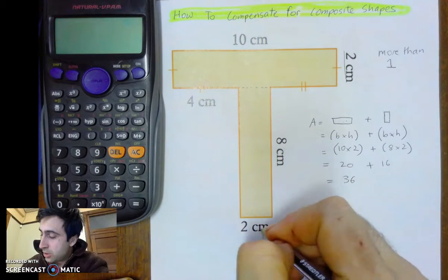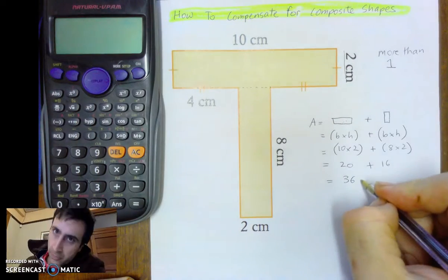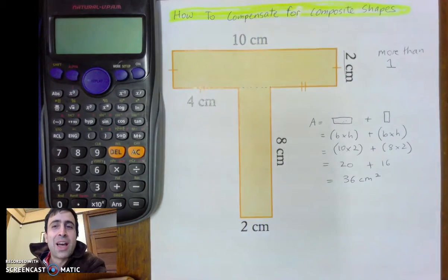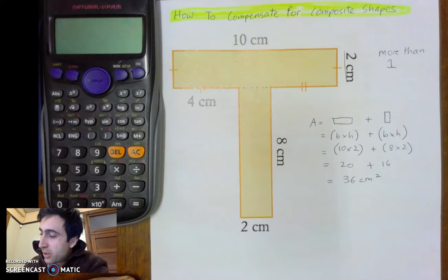So, we'll just double check, because I didn't check that before, centimetres, centimetres, centimetres. Now, this type of composite shape is a composite shape I call an adding shape, because it's two shapes added together.